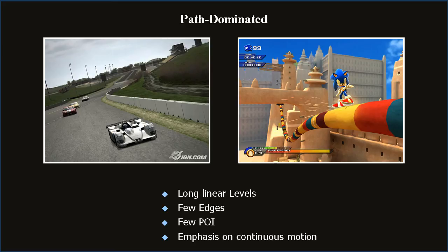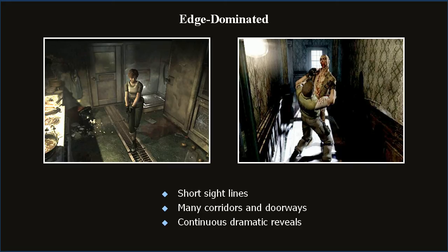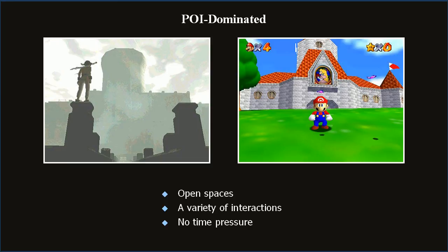In contrast, edge-dominated levels create high tension using short sightlines, possibly as hallways and doors. This constant beat provides a continuous stream of dramatic reveals — for example, Resident Evil, where every threshold is a major event. Edge-dominated rhythms involve short sightlines, many corridors and doorways, and constant dramatic reveals. The last commonly used rhythm is levels dominated by points of interest — awe-inspiring games defined by open spaces with many things to interact with, coupled with a general lack of time pressure, for example ICO or Mario World. Exploration is the player's reward for time spent there.